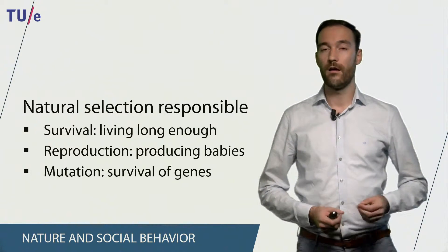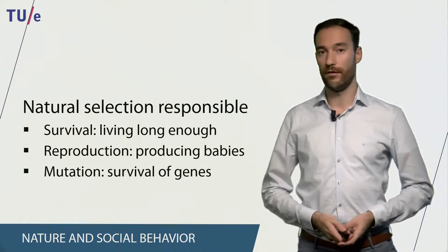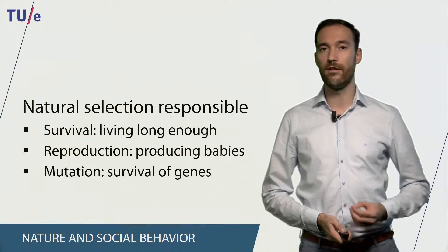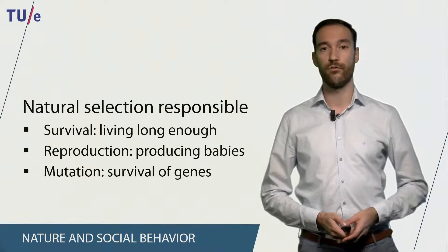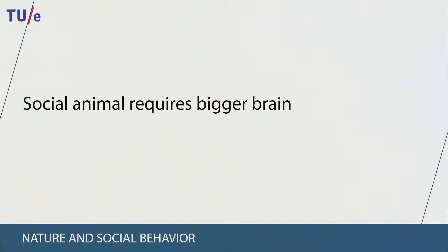Our genes are more likely to survive if they enable these traits. For example, a gene that allows us to live longer is less likely to persist than a gene that allows us to produce more babies. One other important genetic component is related to our brains. The human brain appears to have evolved to allow us to have rich social lives, and it thus appears that social animals require bigger brains.